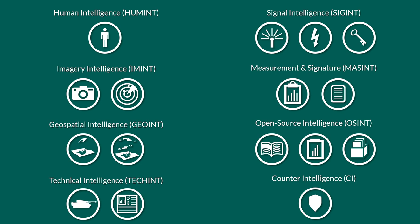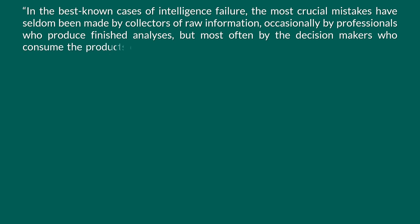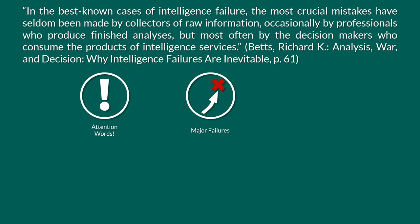So why do intelligence failures happen? Well, for the most part, the failures actually happen outside the intelligence services, according to Richard Betts. In the best known cases of intelligence failure, the most crucial mistakes have seldom been made by collectors of raw information, occasionally by professionals who produce finished analysis, but most often by the decision makers who consume the products of intelligence services. It is important to note that he states 'best known cases,' and also we need to consider that major failures are often the result of decisions, and those are usually not taken by the members of the intelligence services. Hence it is quite natural that most failures ultimately are the result of people who make the call, and not of those who write the report.